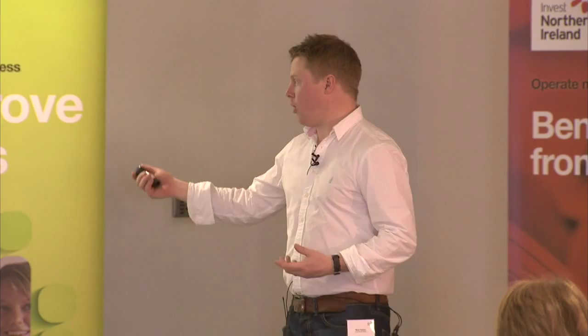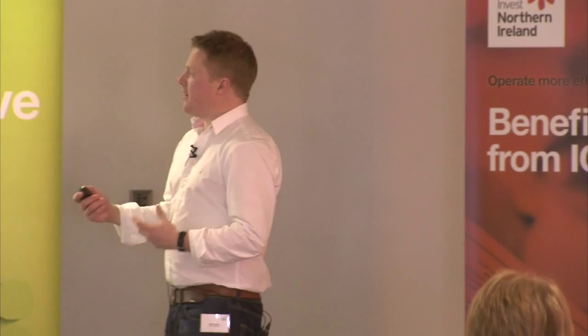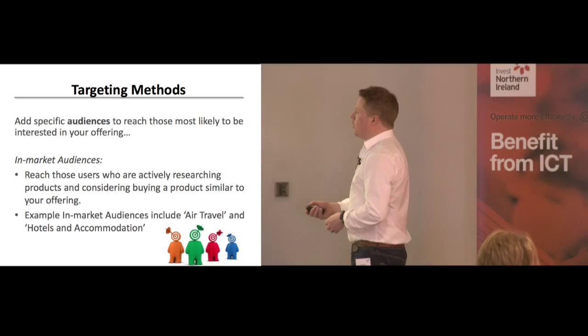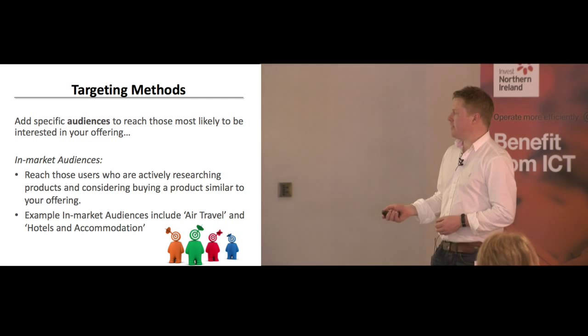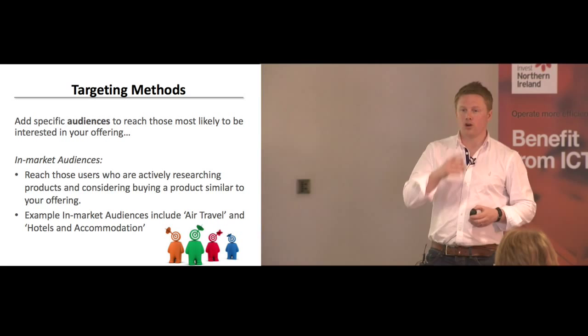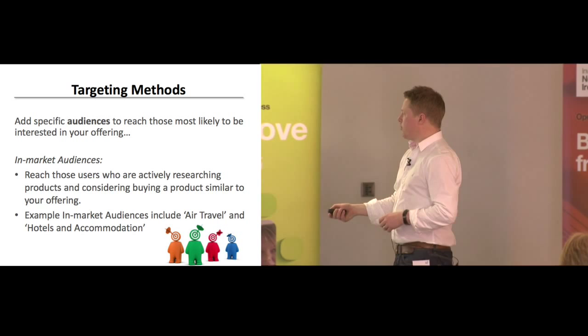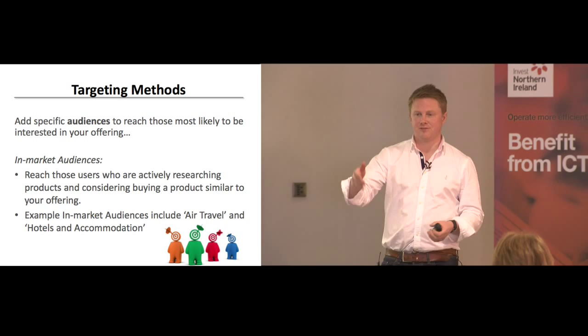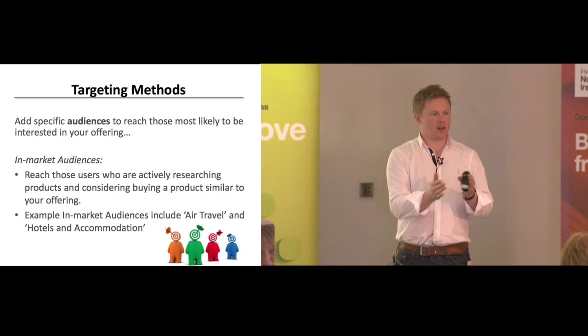There's another method called in-market audiences — it's really new and probably one of the better ones to use. It reaches audiences who are actively researching products or considering purchasing. Somebody in-market is actively doing these things within 30 days. Google monitors their search history on a rolling 30-day basis. For example, somebody looking at air travel might have visited EasyJet, Flybee, or similar sites. Google tracks how far down the funnel they've got — have they gone to checkout, have they looked at prices — and allocates these people into an audience.